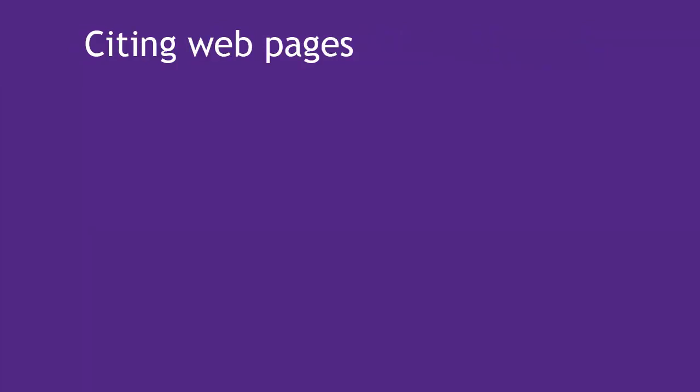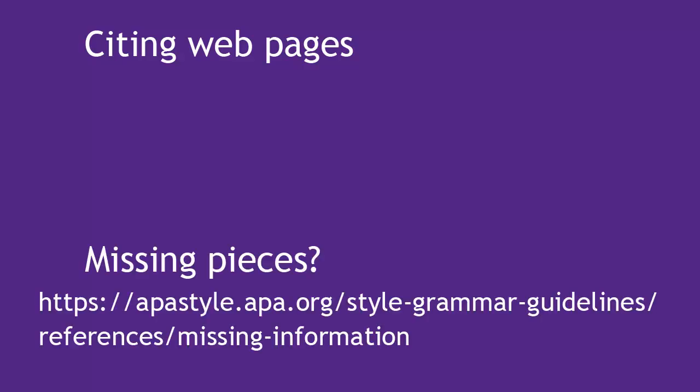Web pages are probably the most difficult citations to create, because a lot of the information can be hard to find or missing. Keep in mind that if you can't find much of this information, it's more challenging to validate that you are in fact using a reliable source. If you are missing information, visit this page from the APA style guidelines to see how you need to rearrange the citation pieces you do have.